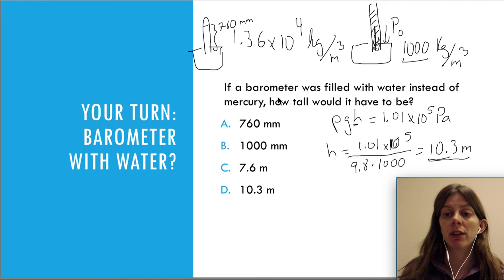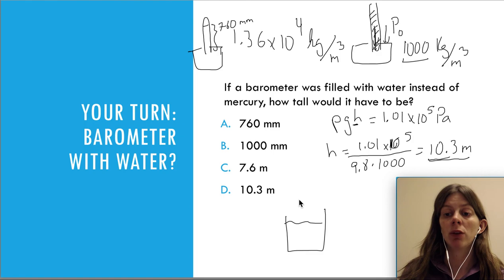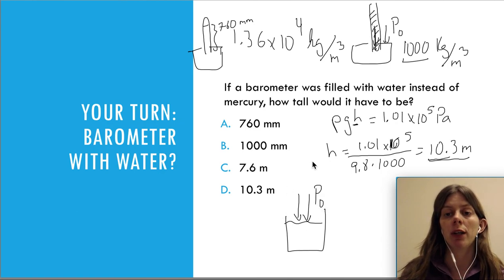That's it for this video. We talked about how the atmosphere exerts pressure. Anytime you have an open liquid — a glass of water or something like that — you just have to know that the pressure at the surface is going to be p₀, the pressure due to the atmosphere.